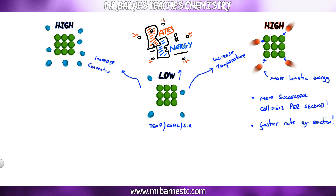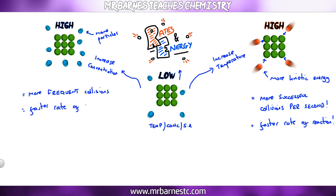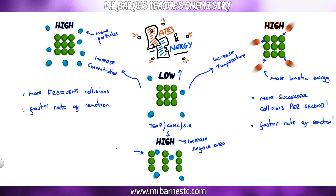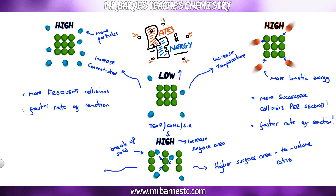Increasing concentration means more particles with the same energy — more particles means more frequent collisions, and more frequent collisions means a faster rate of reaction. Increasing surface area means breaking the solid into smaller pieces, so acid particles can reach more places — a higher surface area to volume ratio leads to more frequent collisions and therefore a faster rate of reaction.